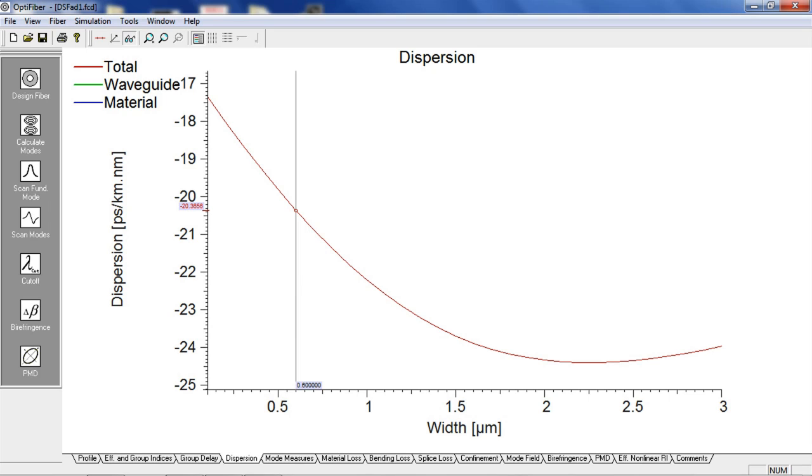From this graph, we can see that in order to shift the dispersion by 3 picoseconds per kilometer per nanometer, the width will need to be increased to some value between 1.3 and 1.4 microns, for a dispersion of 23.3 picoseconds per kilometer per nanometer.